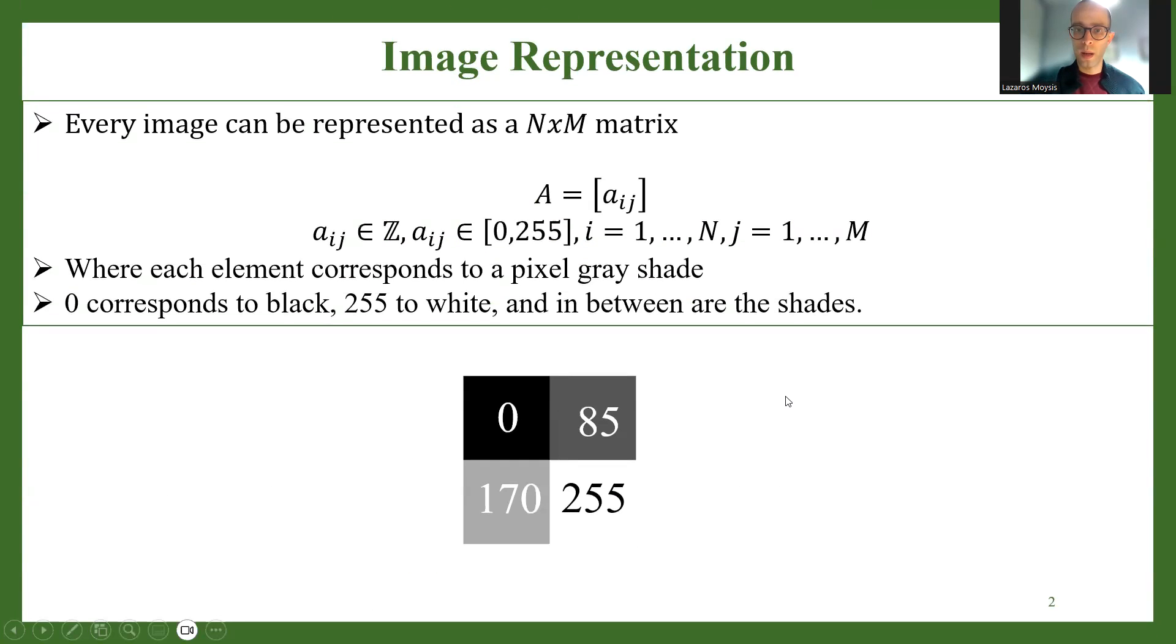So first of all, let's explain the basics. What is an image? An image can be represented in any computer language as a matrix. Let's say we have an image of size N by M. This basically means that this image is a matrix of integer values N by M in dimension, and each pixel in the image is represented by an integer value in the interval 0 to 255 for grayscale images.